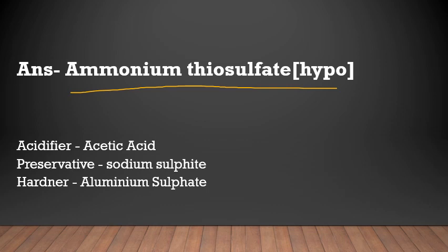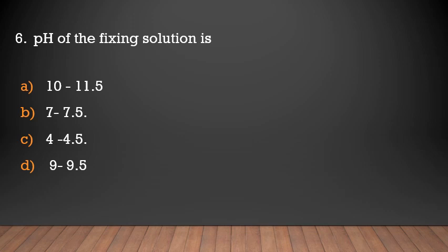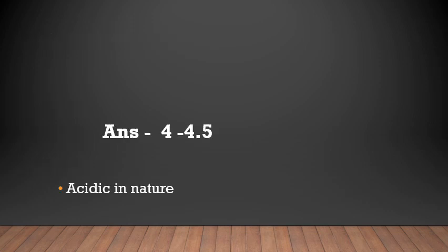Components of fixing solution include: acetic acid acts as the acidifier, sodium sulfite acts as the preservative, and aluminium sulfate acts as the hardener. The pH of the fixing solution — options: 10 to 11.5, 7 to 7.5, 4 to 4.5, 9 to 9.5. Answer: 4 to 4.5. The fixing solution is acidic in nature.